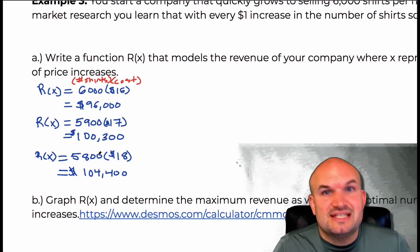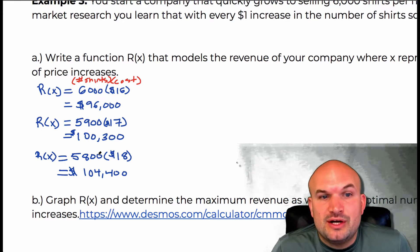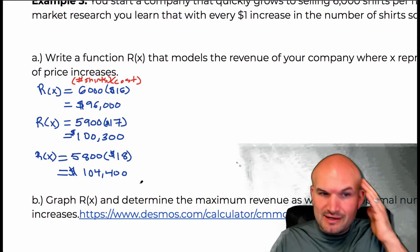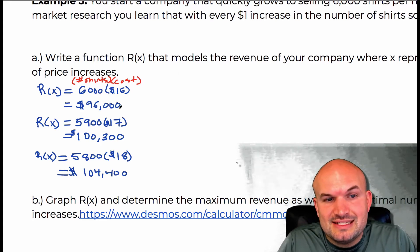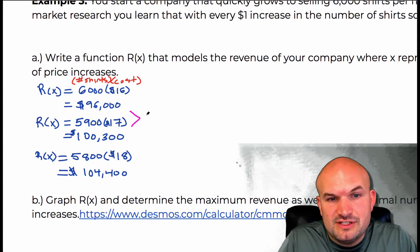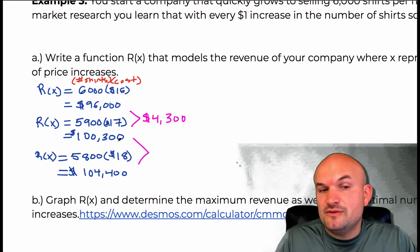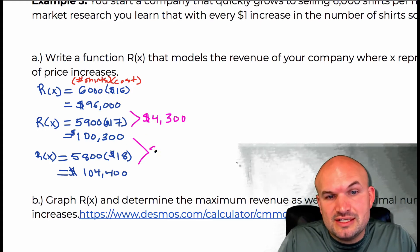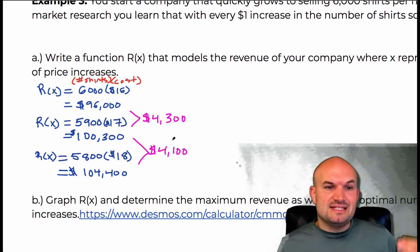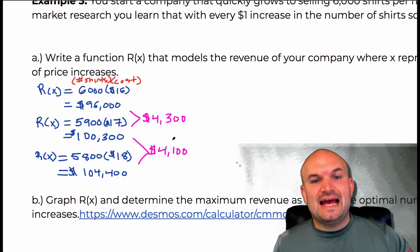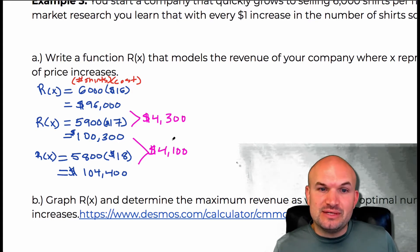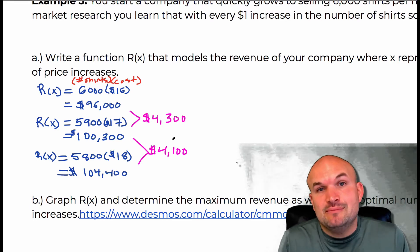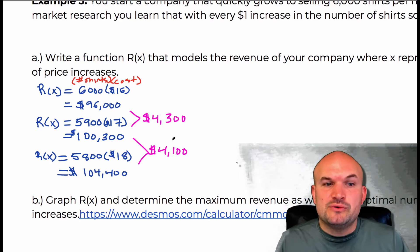Also, let's look at the difference between $96,000 and $100,300 — the price increase was $4,300. Now if we look at the price increase from $100,300 to $104,400, you can see that the increase is $4,100. So even though the revenue is increasing each time, the rate at which it is increasing is actually decreasing. Eventually it's not going to be advantageous for us to keep on increasing the price.